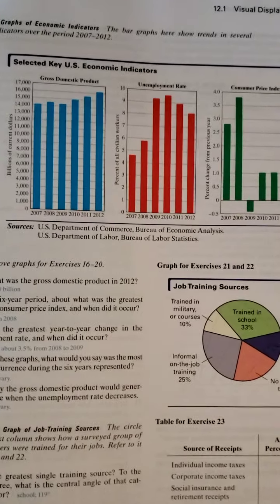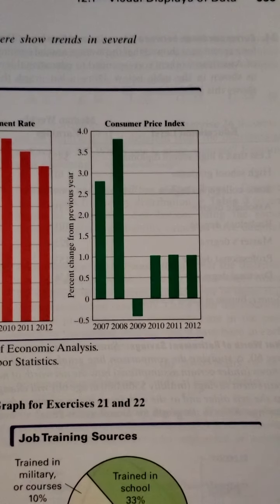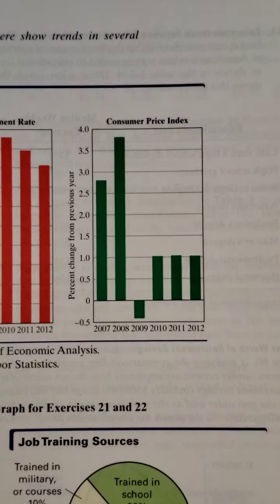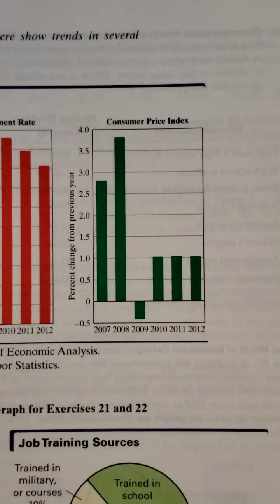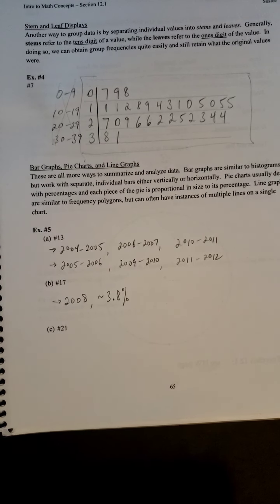Now we have to approximate what it is. It's between 3.5 and 4, but it's more than halfway, so I would guess it's probably about 3.8. That would be your answer — you've got to give the year and the amount. So this was in 2008, and it's roughly 3.8%. That's all they want.